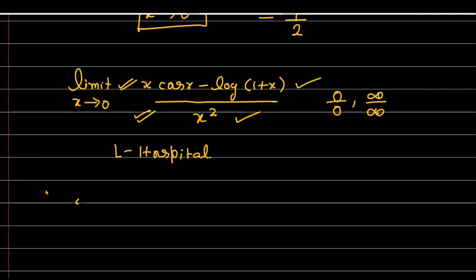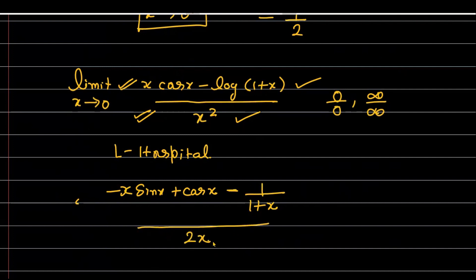Let's differentiate. The derivative of x·cos(x) is cos(x) − x·sin(x), and the derivative of log(1+x) is 1/(1+x). The denominator x² differentiates to 2x. Now if I substitute x = 0, the numerator gives: cos(0) − 0·sin(0) − 1/(1+0) = 1 − 0 − 1 = 0, and the denominator gives 0. So it is still 0/0 — the indeterminate form is not yet removed.